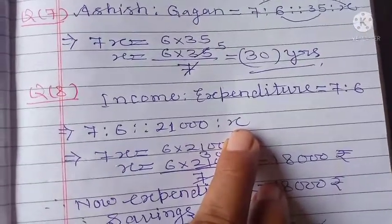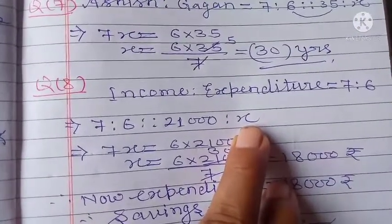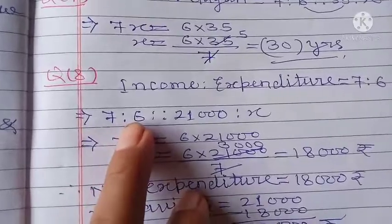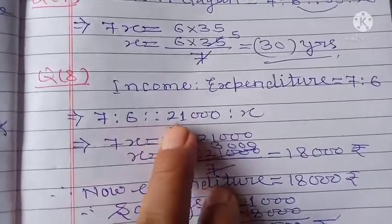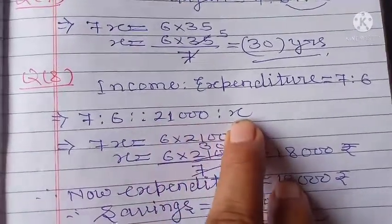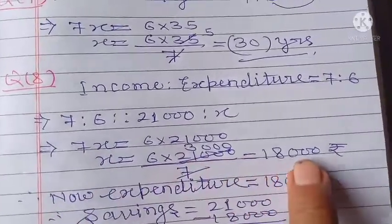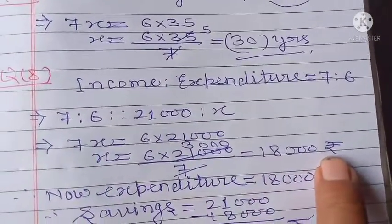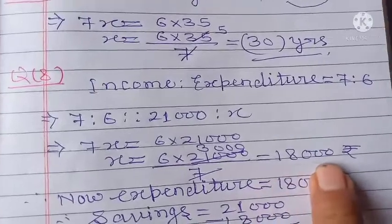We set up the proportion as 7:x equals 21,000:expenditure. Solving this, the expenditure comes to rupees 18,000.